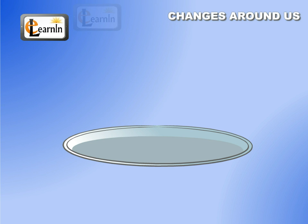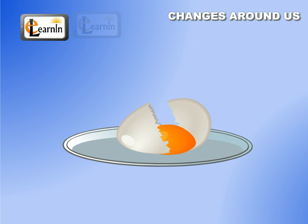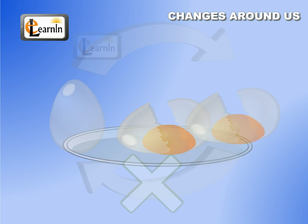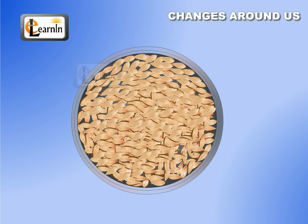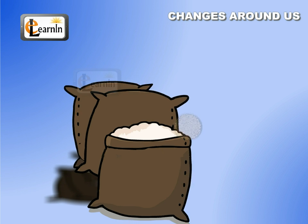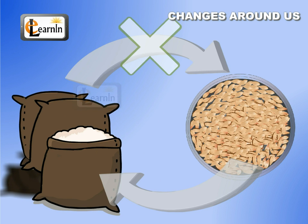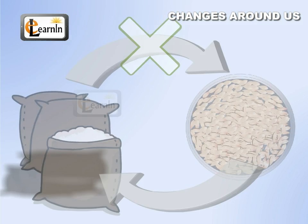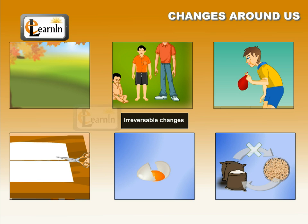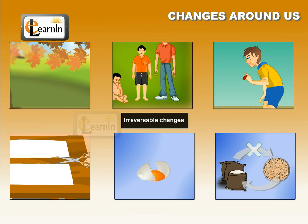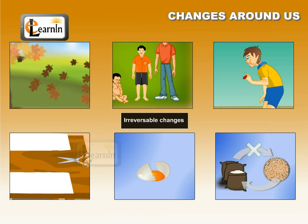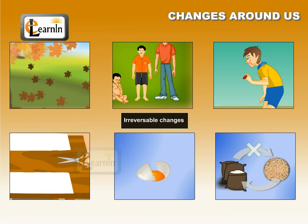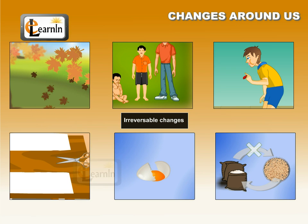Let's take some more examples. If you crack an egg open, the yolk and egg white cannot be made into an egg again. We can convert grains into flour, but we cannot derive the grain back from the flour. Now do you notice the differences between reversible and irreversible change? Look around you and observe all the changes that come under reversible and irreversible change.